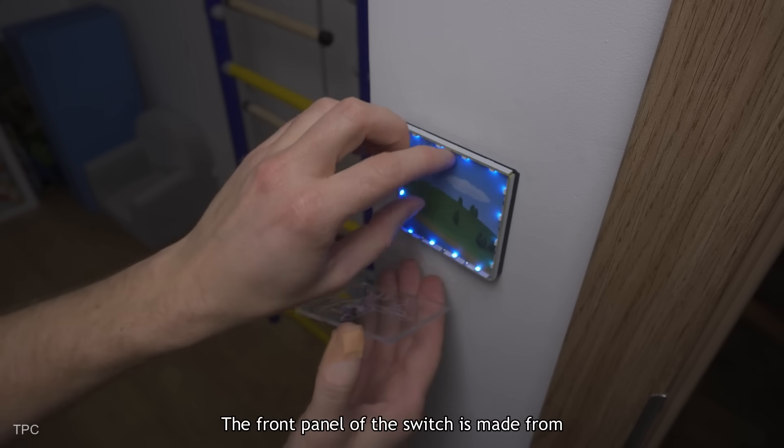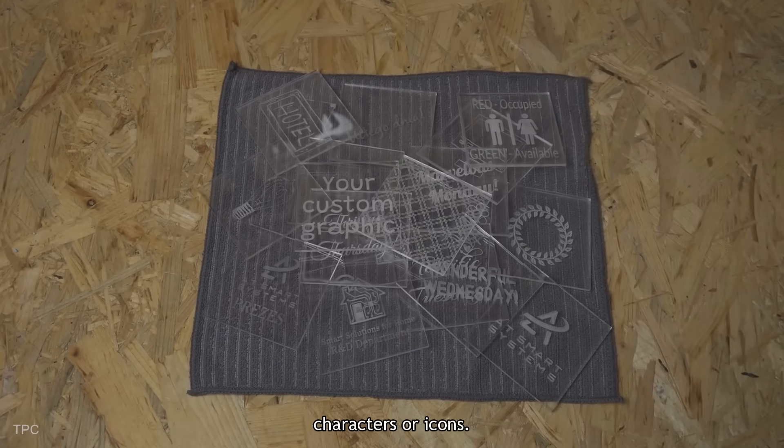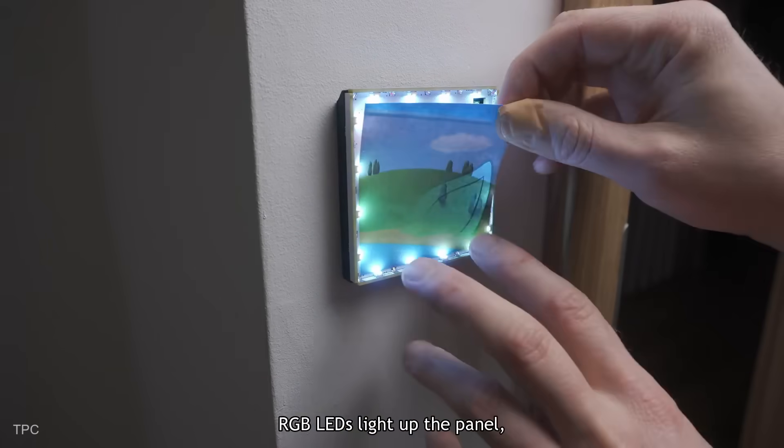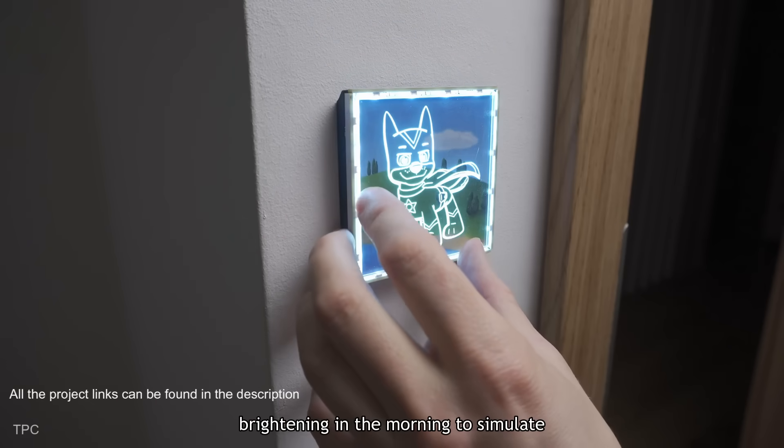The front panel of the switch is made from clear acrylic, engraved with custom designs like characters or icons. RGB LEDs light up the panel, working as a soft nightlight or gradually brightening in the morning to simulate sunrise. Number 8.